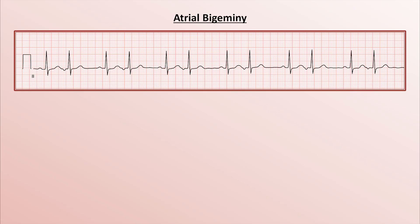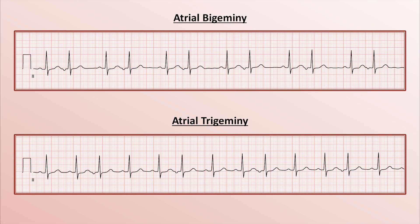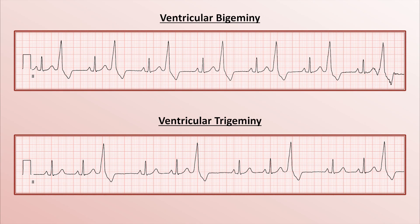Bigeminal and trigeminal rhythms are those in which there is a recurring pattern to PACs or PVCs. In my experience, they are the most common cause of a regularly irregular rhythm. In atrial bigeminy, we see a PAC occurring every other beat. In atrial trigeminy, there is a PAC occurring every third beat. Ventricular bi- and trigeminy are analogous. These rhythms are important because, particularly in the ventricular forms, these premature complexes sometimes fail to generate a pulse. So telemetry might be recording one heart rate while the patient's pulse is functionally half or two-thirds of that number. If you notice a significant discrepancy between the pulse recorded by telemetry and continuous pulse oximetry, this is one of the possible explanations to consider.